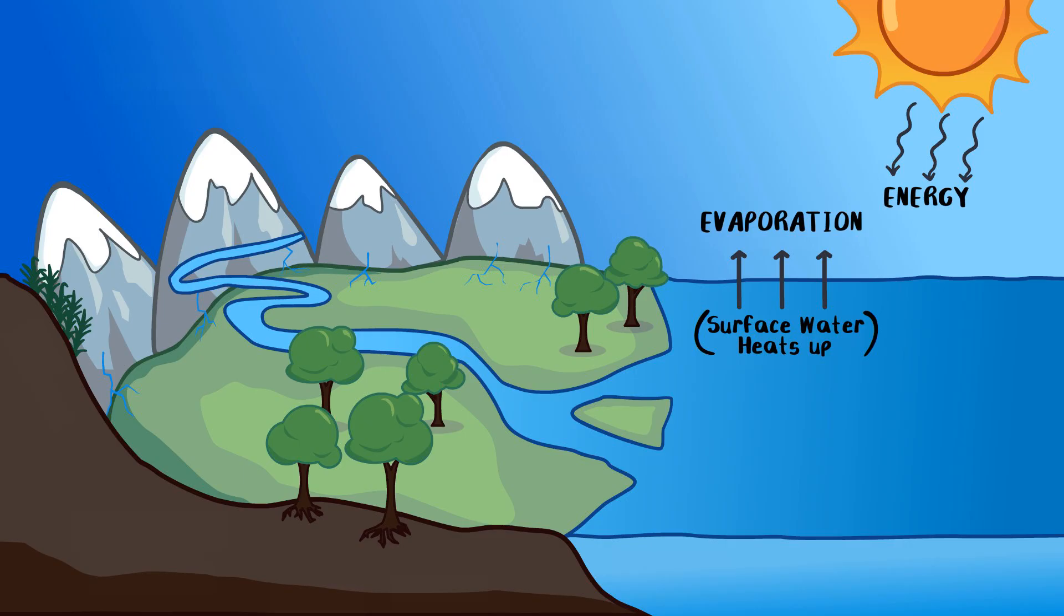Plants also contribute to the cycle through transpiration. Water is absorbed by roots, moves up through the stem, and then escapes through tiny openings in the leaves as vapor. This process not only moves water, but also cools the plant, just like sweating cools your skin.